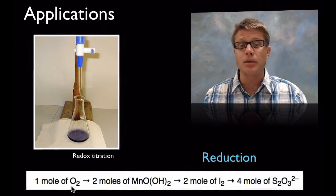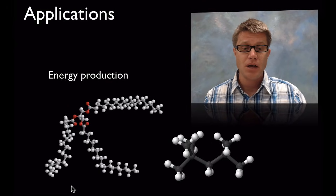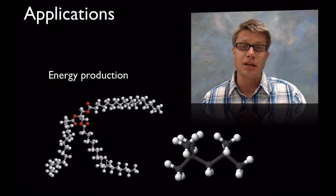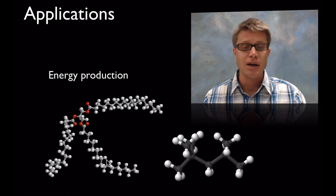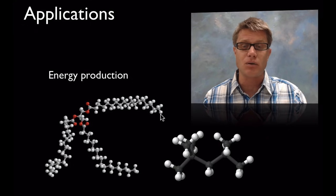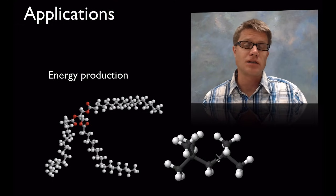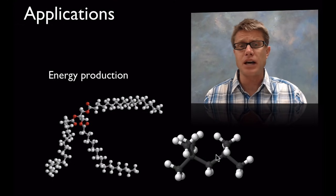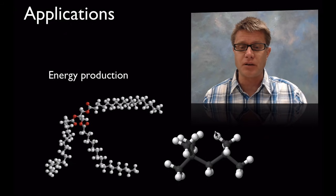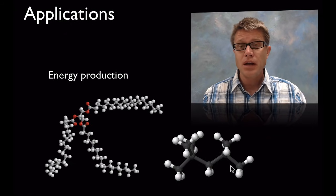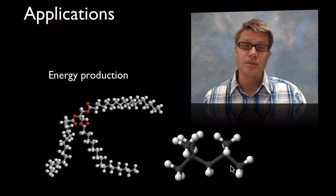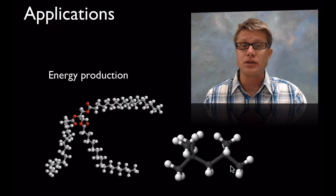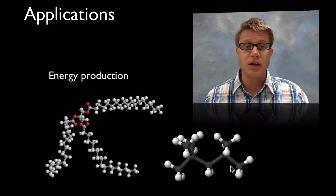Another application of redox is energy production. This big molecule is a triglyceride — that's a fat found in your food. It has a high amount of energy because of the electrons in the hydrogen atoms around the carbon. Similarly, isooctane found in gasoline also has a high energy from those hydrogen-carbon bonds. In a redox reaction we can transfer those electrons to oxygen and release energy in that transfer.